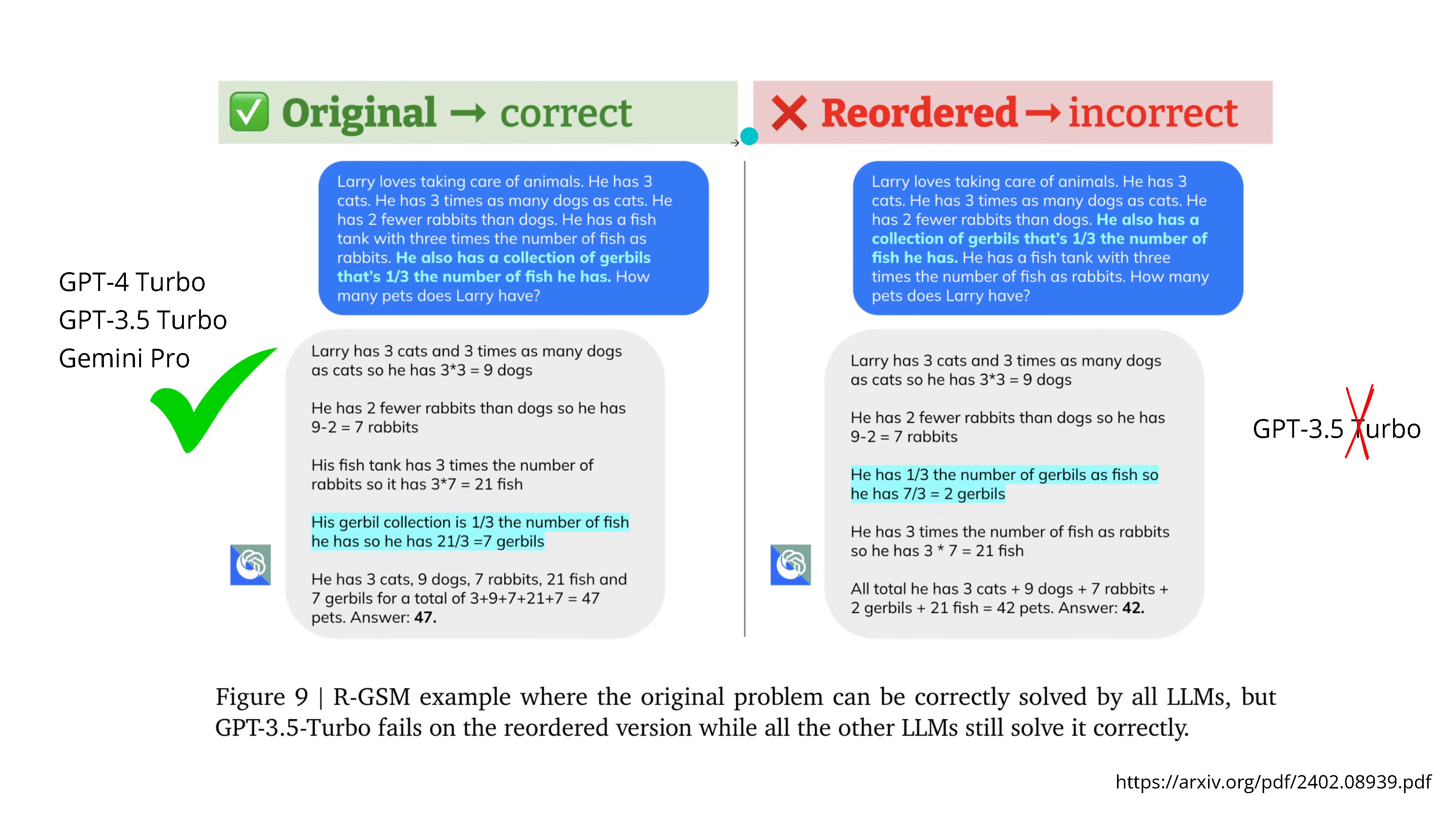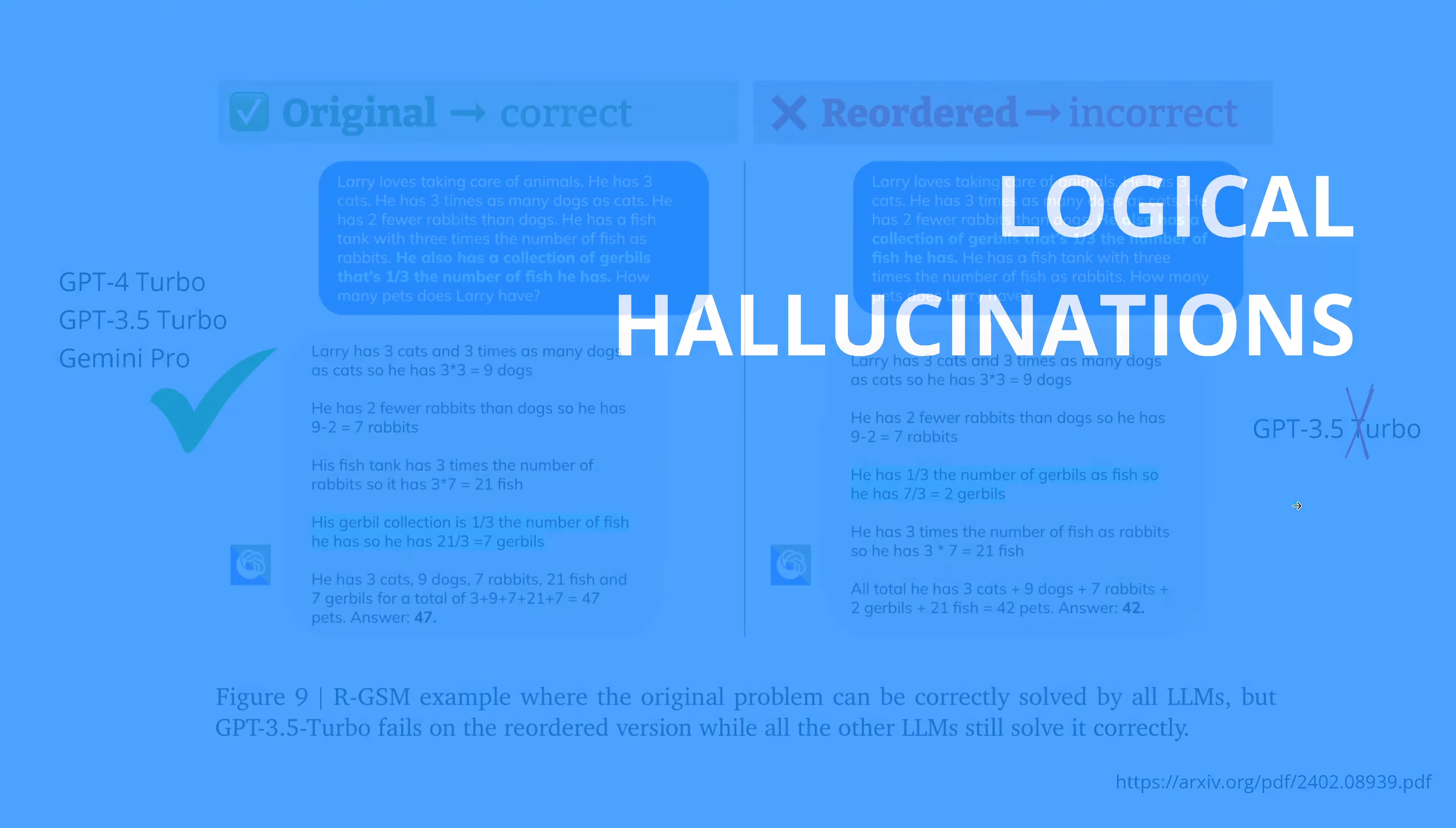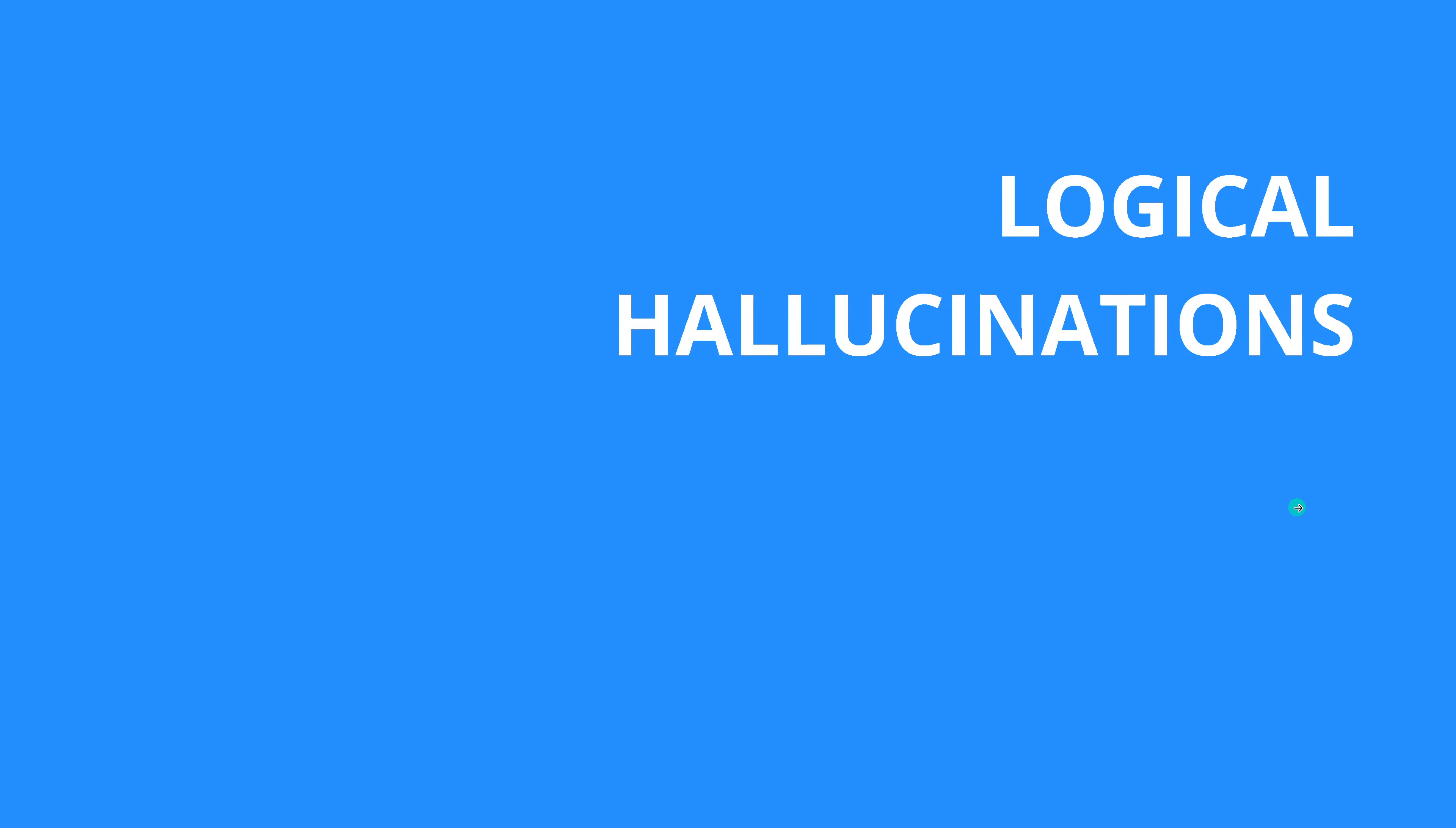So there's an extreme problem, an extreme dependency of a linear augmentation theory in a timely order. Here another example. Here we have something where all three can do it. But if we exchange now the position of one of the sentences, everything else is identical, sometimes only one system fails. Interesting, absolutely interesting.